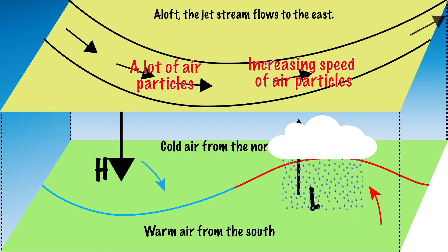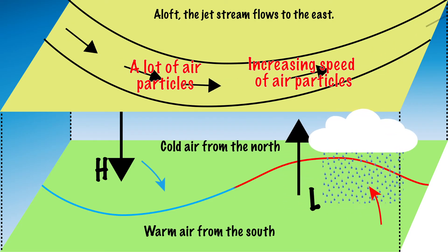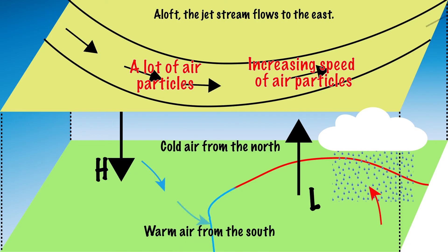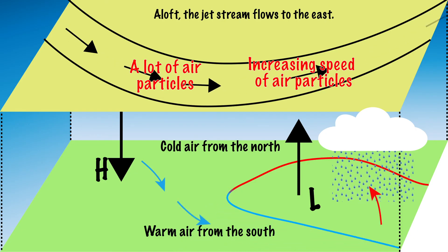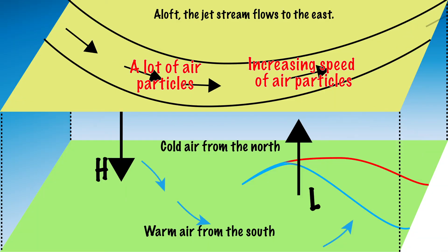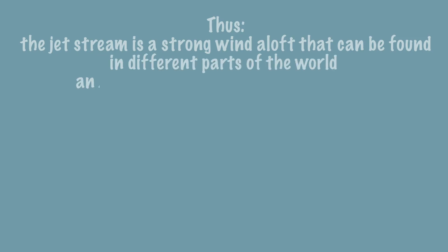This low pressure area often follows the movement of the jet stream to the northeast. Eventually, cold air turns around the low pressure area, stopping the flow of warm air, stopping precipitation, and changing the weather. Thus, the jet stream is a strong wind aloft that can be found in different parts of the world and has great influence on the weather.